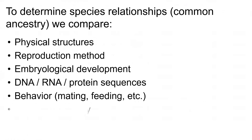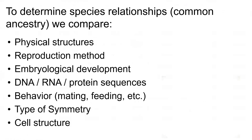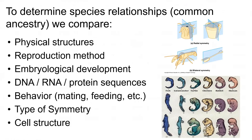We try to compare a lot of things to determine relationships between species: their physical structures, how they reproduce, what their embryos look like, their behavior, their actual physical symmetry, their cell structure. But what's most important is their DNA and their RNA protein sequences.